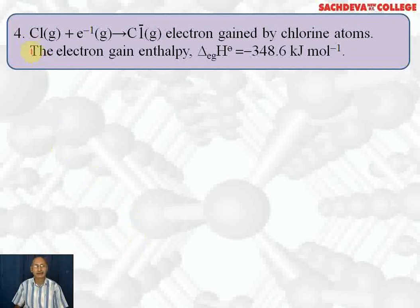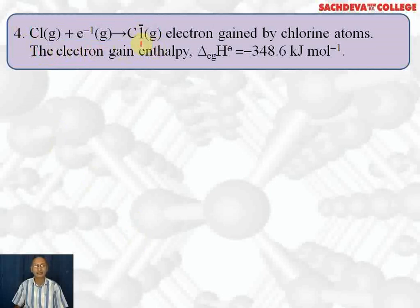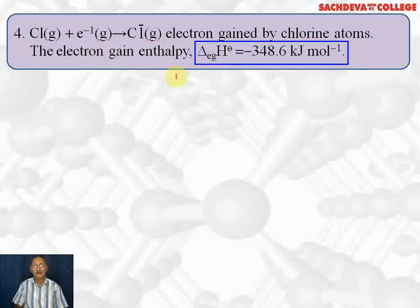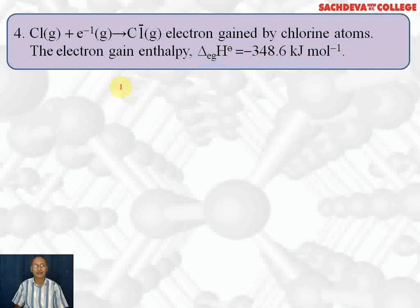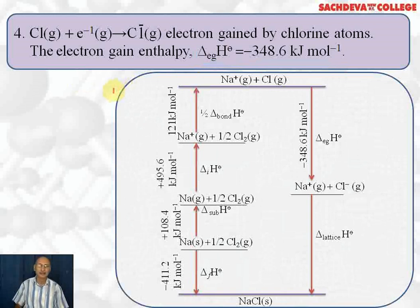The fourth step: the chlorine atom in gaseous state will gain one electron to form chloride ion. When an electron is gained, energy is released, and this energy released is called electron gain enthalpy. The value of chlorine's electron gain enthalpy is highest among the halogens and is equal to minus 348.6 kilojoules per mole. This is an exothermic process.